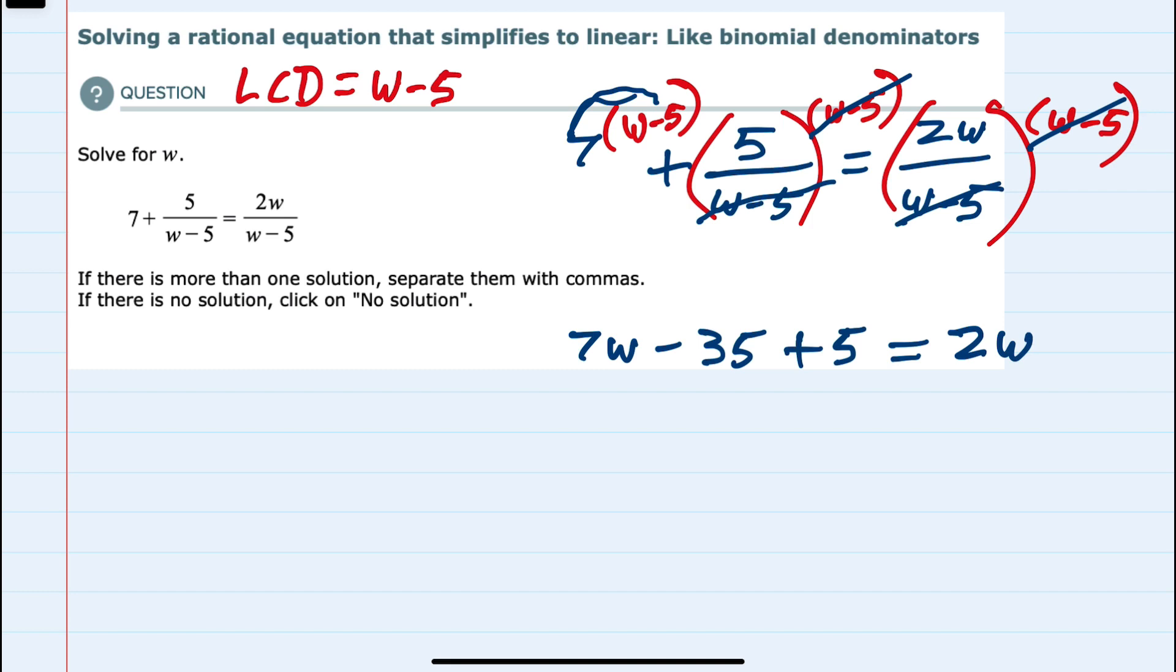From here, I can combine like terms. So on the left-hand side, this is 7w minus 35 plus 5 is minus 30 equals 2w.